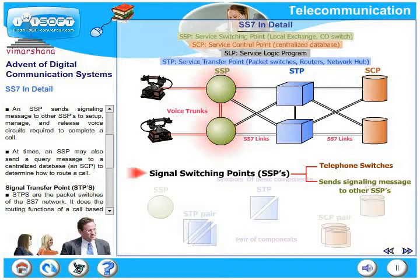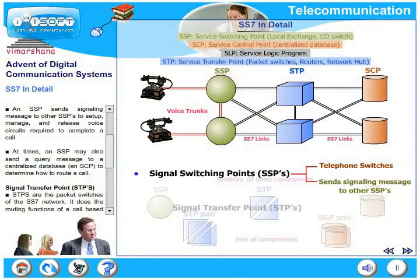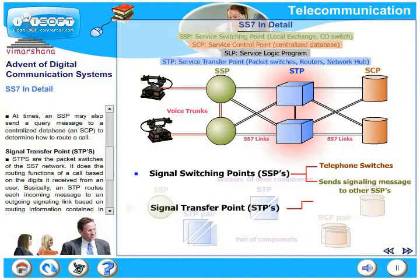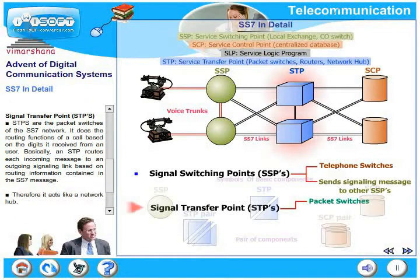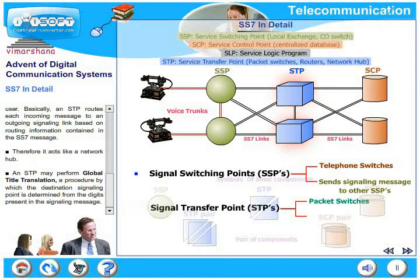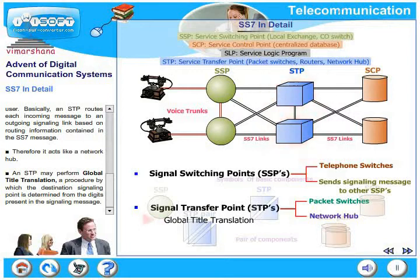At times, an SSP may also send a query message to a centralized database called SCP to determine how to route a particular call. The next element is STP — signal transfer point. STPs are the packet switchers of the SS7 network. They perform routing based on the digits received from the user. An STP routes each incoming message to an outgoing signaling link based on routing information contained in the SS7 message, acting like a network hub. An STP may perform global title translation, which is a procedure by which the destination signaling point is determined from the digits in the signaling message.